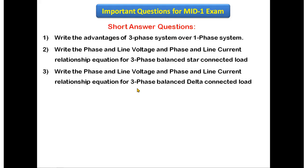The next question is: write the phase and line voltage, and phase and line current relationships for the three-phase balanced delta connected load. For the delta connected load also, just write the equations for the relationships between these quantities.